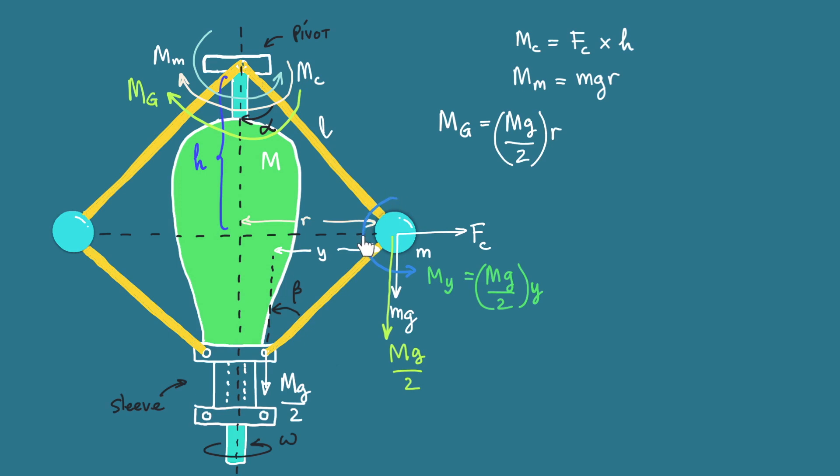Now this moment MY will also contribute to the moment at the pivot. With the concept of couple, we can replace this moment with couples of linear forces in horizontal directions. Because the moment is counterclockwise, the couple at this connection will be toward the shaft and at the bottom is in the opposite direction. Let's say the force is FZ.